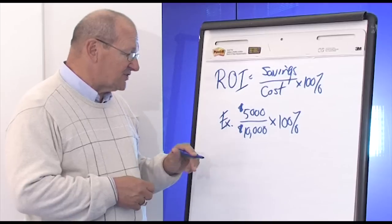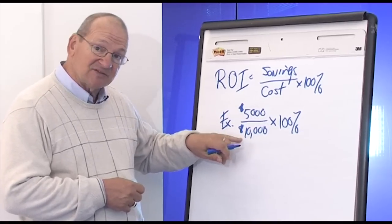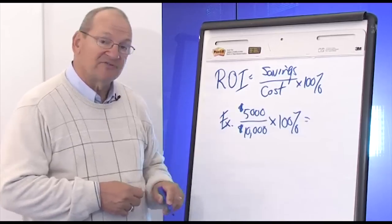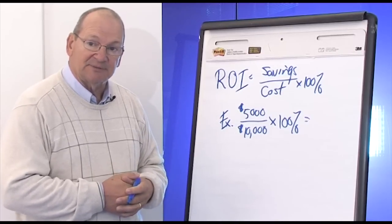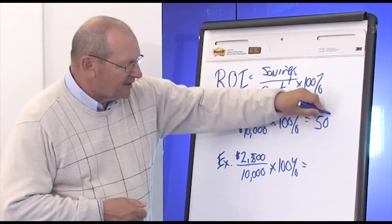Let's take the same project: $5,000 worth of savings divided by $10,000 worth of cost times 100%. Pause the video and do the calculation. The answer is a 50% ROI.